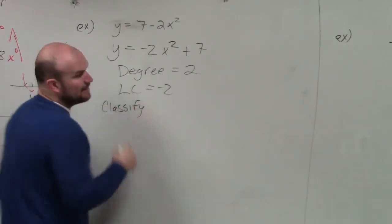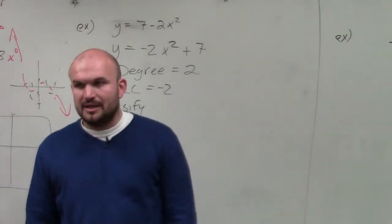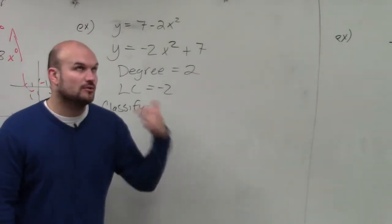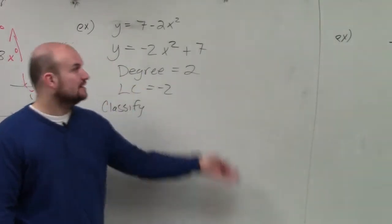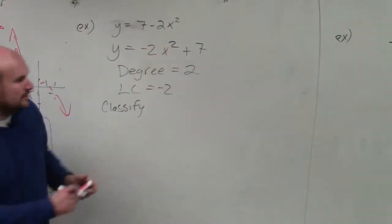Now let's go ahead and classify this. Now remember, we classify by degree and number of terms. The degree can either be linear, quadratic, cubic, or quartic. Since we have a degree of 2, this is a quadratic.